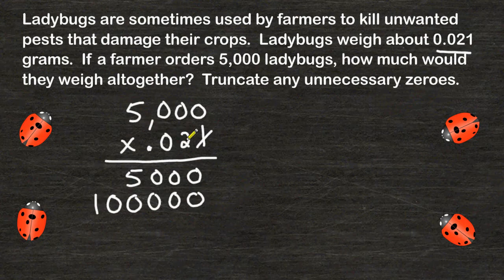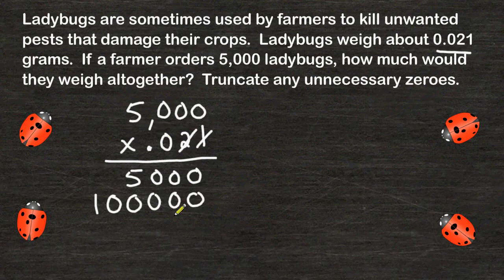Now we are finished with this place value. In the next place value, we have a zero. Some people actually multiply zero by all of these numbers, but that just gives you a bunch of zeros at the bottom, and there's no point in adding nothing, so we are just going to leave this zero alone.